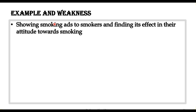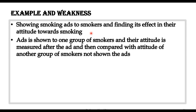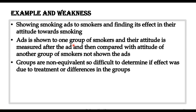Let's understand this with an example: showing smoking ads to smokers and finding the effect on their attitude towards smoking. Using the post-test non-equivalent group design, we show the smoking ads to one group of smokers and then find their attitude towards smoking after the ads — this is the post-test. In comparison, we have another group of smokers who are not shown the ad.